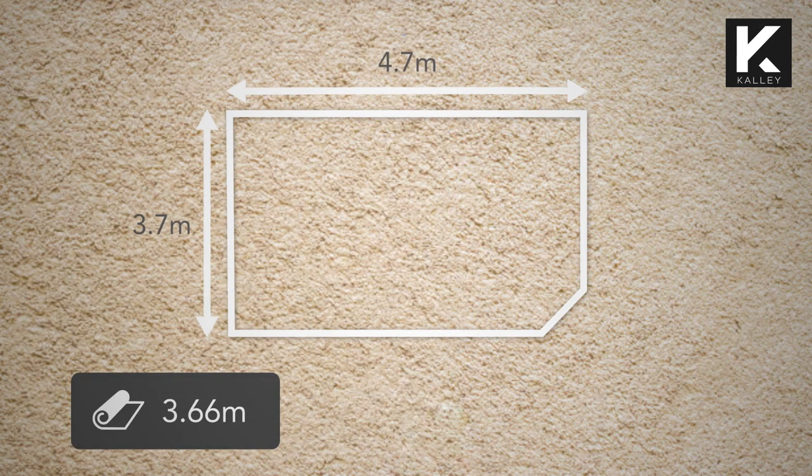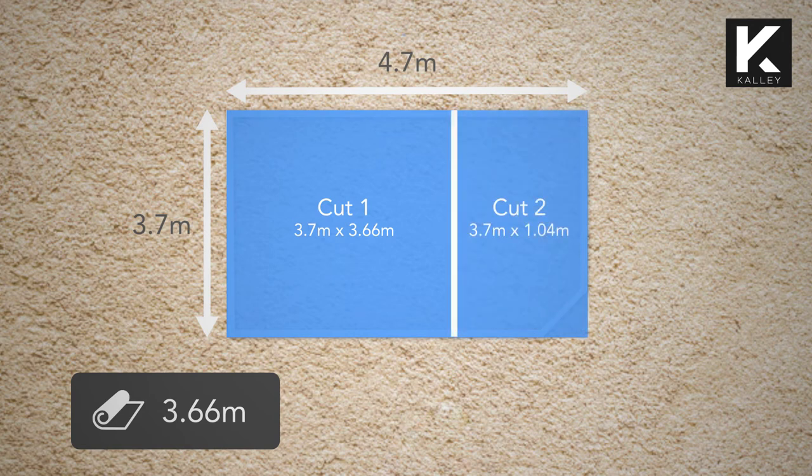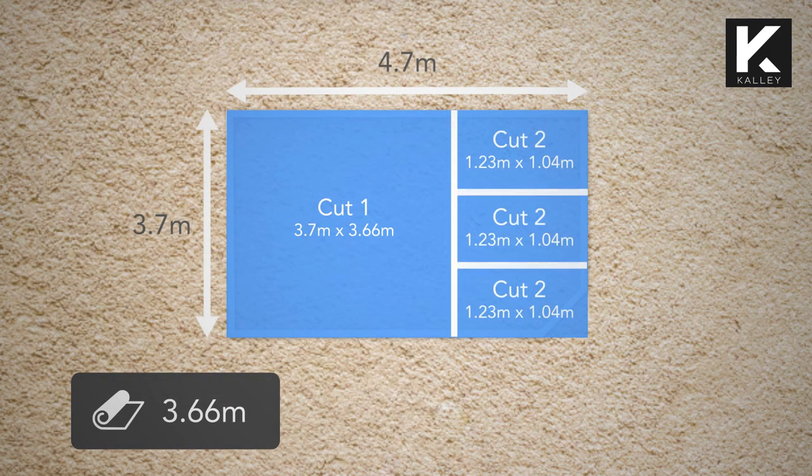Cut 1 is 3.7 metres by 3.66 metres wide. You still have to cover the remainder of 1.04 metres by 3.7 metres. You can see the 1.04 metres is between 0.915 and 1.22 metres on the table, so you will have to divide the remaining distance by 3.